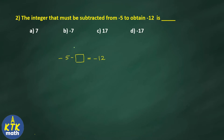You can solve directly or substitute options one by one. If I write 7 in that place: minus 5 minus 7 gives you minus 12, so option A is already the correct answer. If you write minus 7, minus of minus becomes plus, so minus 5 plus 7 gives only 2. Therefore option A, which is 7, is the answer for question number 2.